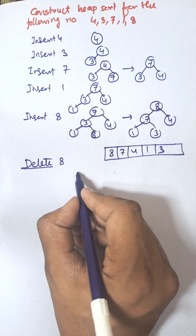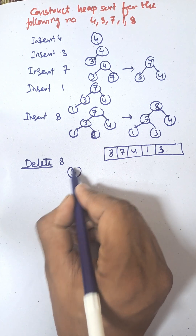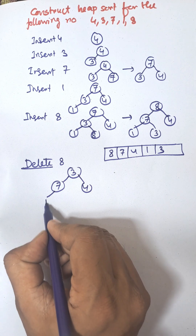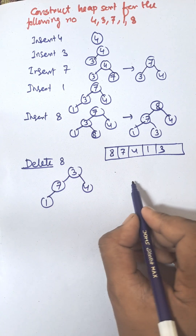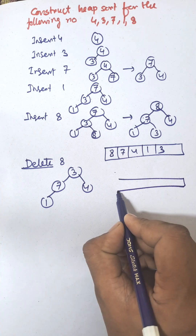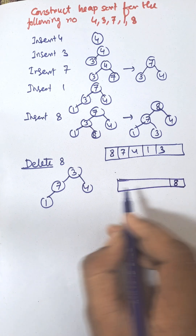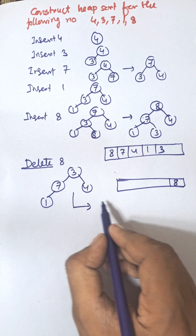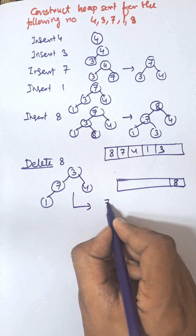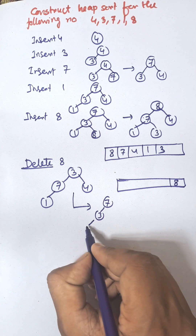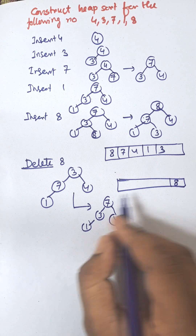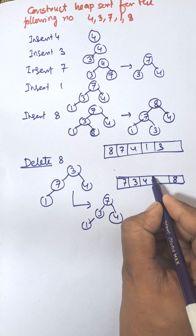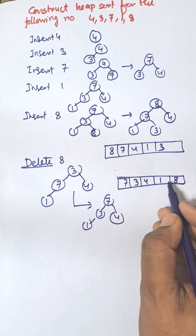Delete 8. The last node will be the temporary root of the tree — that is 3. Now the tree is 3, 7, 4, 1. Then 8 is deleted and transferred to the last position of the array. Now we need to construct the max heap again from 7, 3, 1, and 4.